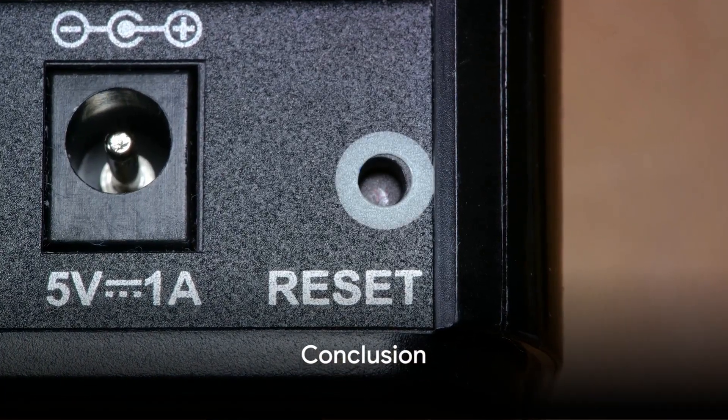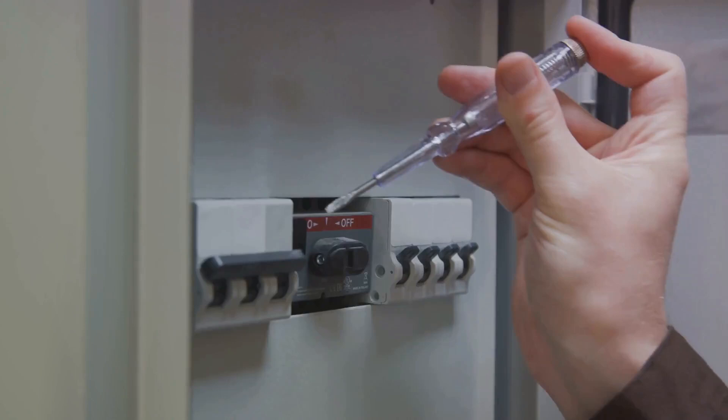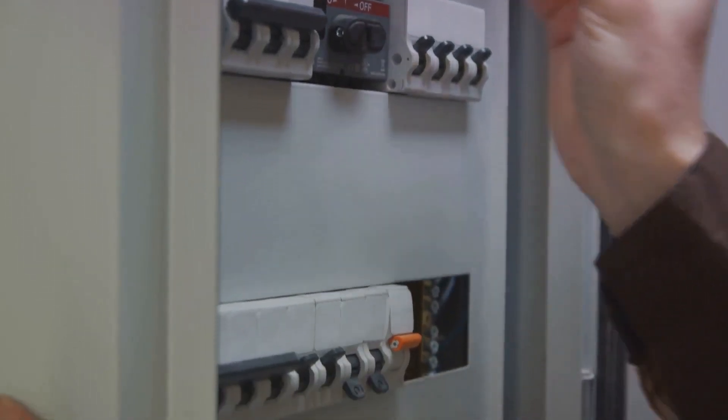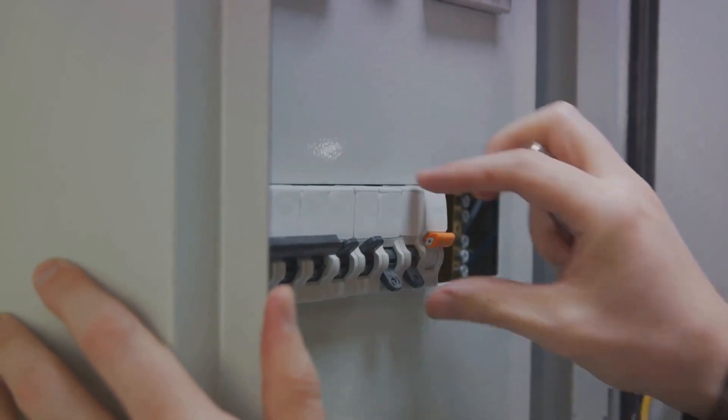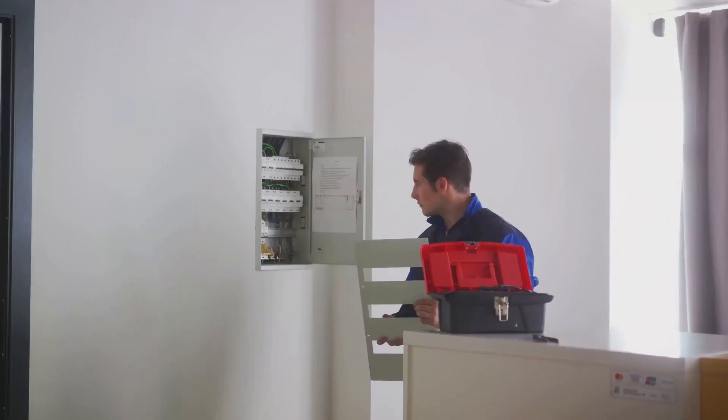So, to encapsulate, RCCBs and ELCBs guard against electric shocks caused by current leakage, focusing on personal safety. Meanwhile, MCBs and MCCBs protect against overcurrents and short circuits, concentrating on protecting electrical circuits and devices.